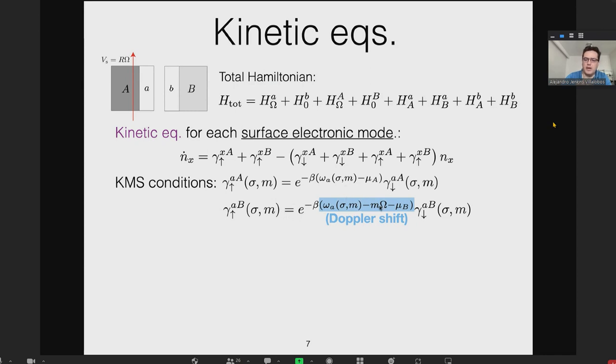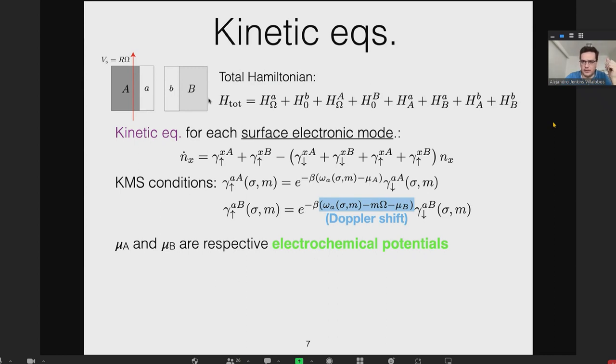The KMS conditions relate the pumping rate (up arrow) to the damping rate (down arrow) for electrons coming from the bath or going into the bath. Mathematically, the key point is that the relative motion of the baths introduces a Doppler shift in the frequency. Normally in equilibrium, the damping rate is always greater than the pumping rate, but if mΩ introduced by motion is large enough, it can change the sign and make pumping greater than damping. In statistical mechanics this is called population inversion.